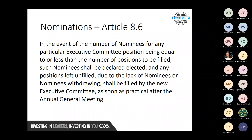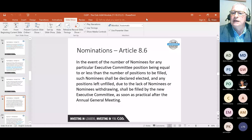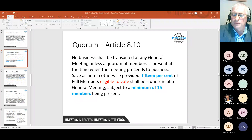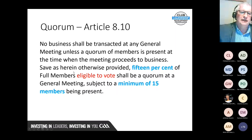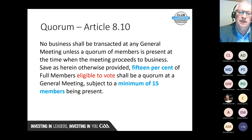Pat concludes his presentation and hands over to Simon. Simon begins by covering the quorum requirements. Article 8.10 says no business shall be transacted at any general meeting unless a quorum of members is present at the time when the meeting proceeds to business. Save as otherwise provided, 15% of the full members eligible to vote shall be a quorum, with a minimum of 15 members present. For most clubs, 15 members will be less than 15%.